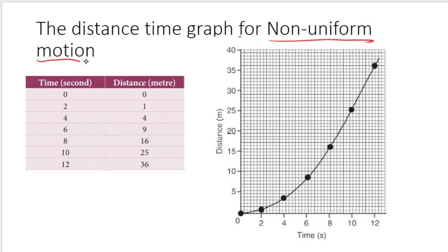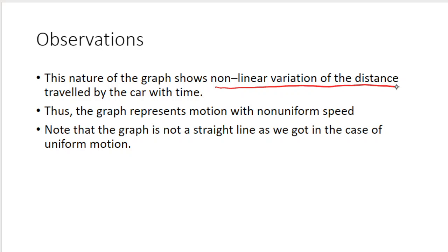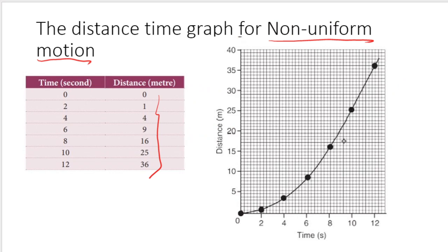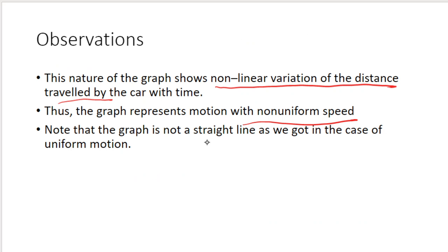For non-uniform motion, unequal distances are covered in equal intervals of time. For example, time intervals are equal at 2, 4, 6 seconds, but the distances are unequal. The graph for non-uniform motion is a non-linear curve — it is not a straight line. It represents non-uniform speed, and the distance increases randomly rather than linearly. This non-linear graph represents non-uniform motion.